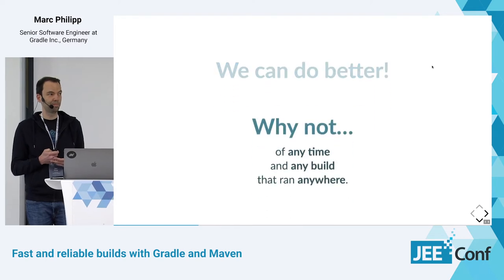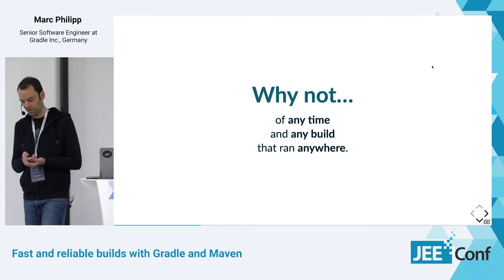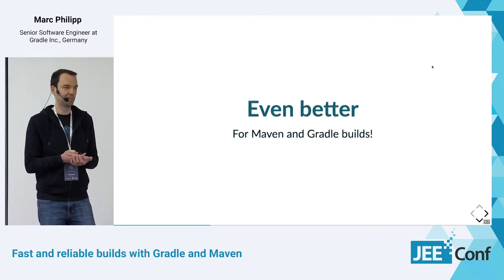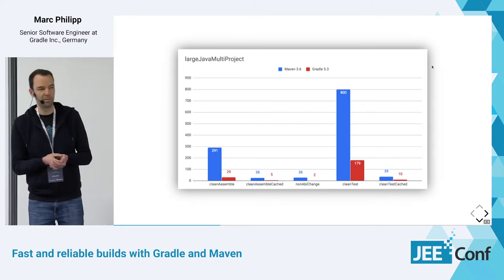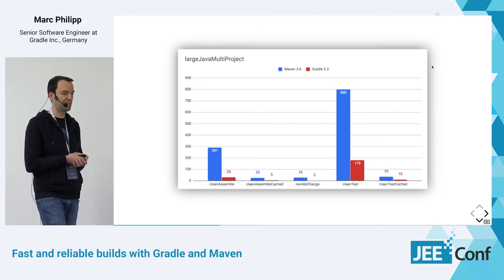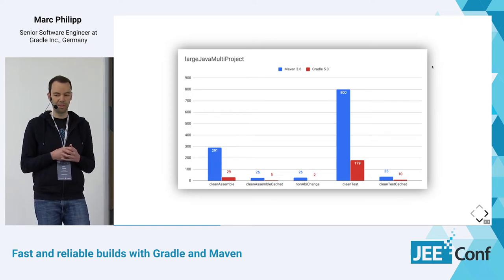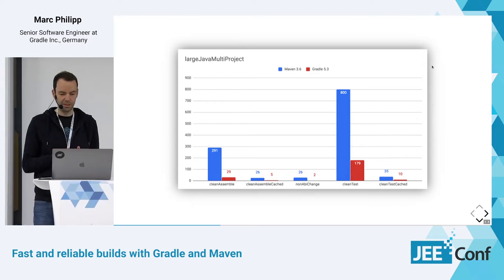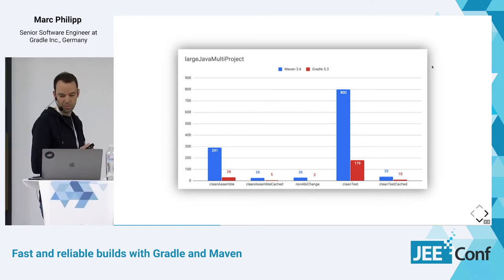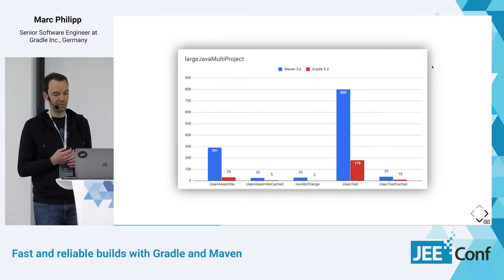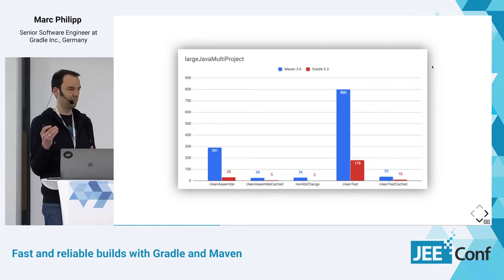We can do better than incremental builds. Why not reuse the results of any build that ran anywhere? That's the vision behind the build cache. We want to do this for both Maven and Gradle builds. This is a performance comparison of a large Java multi-project with 1,000 subprojects, each with about 1,000 lines of code, built using both Maven and Gradle. Maven is shown in blue and Gradle in red. With cache enabled, executing the same thing twice achieves a similar speedup for both Gradle and Maven — but Gradle is still faster by a lot.